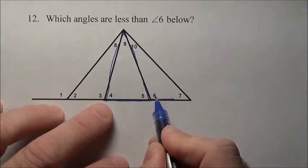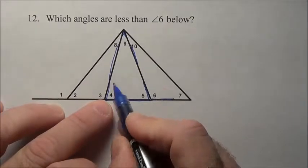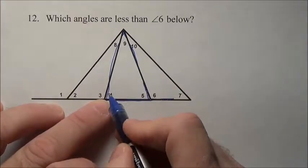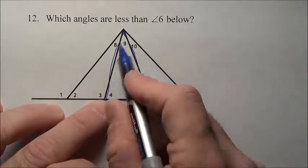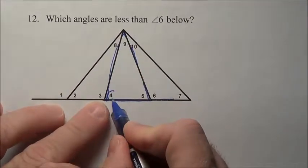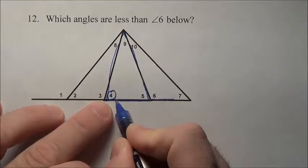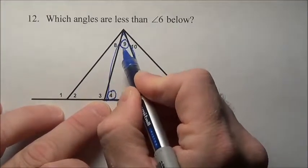If that's true, that means 6 is actually going to be equal to the sum of 4 and 9. That's what we've learned. That will always be equal to these two added together. Well if it's equal to these two added together, it's got to be bigger than each one of them individually. So 6 is bigger than 4 and it's got to be bigger than 9.